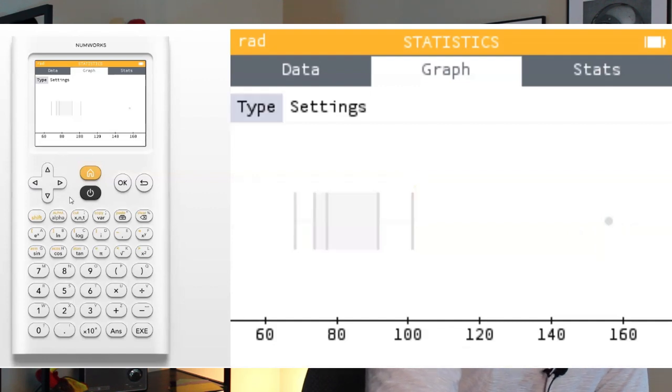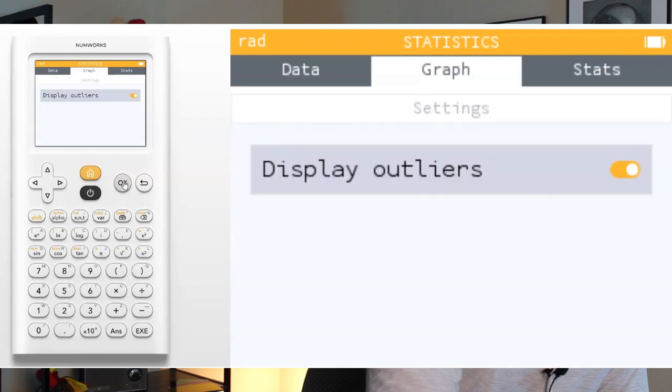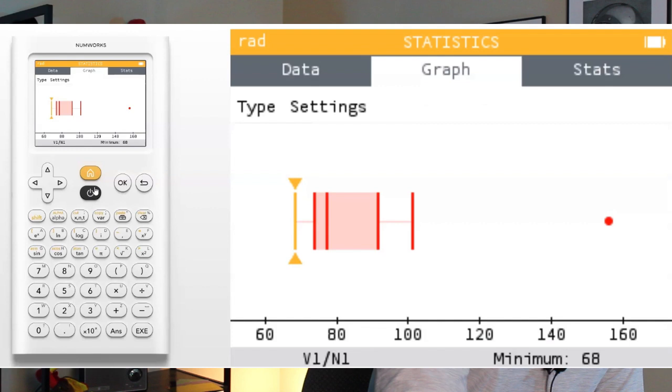You could also go under settings here and you could change it to display outliers or not. For AP statistics, we definitely want to display those outliers. But for basic elementary statistics, maybe middle school, something like that, you don't necessarily have those outliers. We definitely want those outliers turned on. And that's pretty cool there. Pretty simple to do and not too difficult at all. But how cool is that box plot?